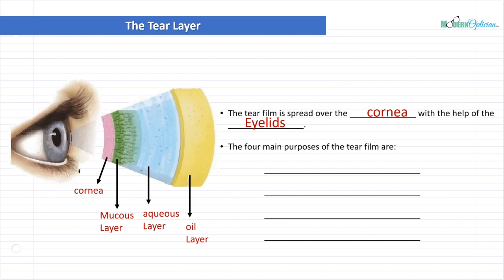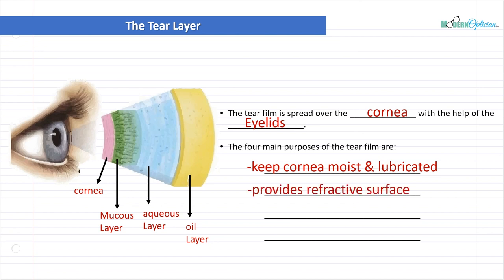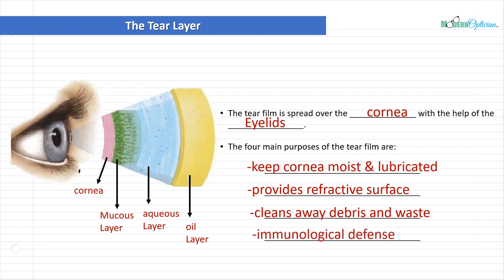The four main purposes of the tear film are: first, keep the cornea moist and lubricated — very important. Second, provide a refractive surface. As we talked about in the last lecture, tears are very important to vision. They provide their own refractive surface and also keep the refractive surface of the cornea perfectly clear and transparent so it can do its job. Third, clean away debris and waste — we get gunk, dust, sand, and debris in our eyes, and tears are there to wash away all the bad stuff.